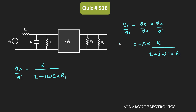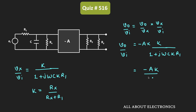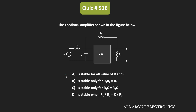In this way, we obtained the expression for Vout divided by Vi. Here A is constant, and K is also constant, where K equals Rx divided by Rx plus R1, and Rx equals R2 divided by 1 plus A. Writing the expression in the S domain: Vout over Vin equals minus A times K divided by 1 plus S times C times K times R1. This is a single-pole response, and therefore irrespective of the values of C and R, this feedback amplifier will be inherently stable. So the correct answer for the given question is option A.